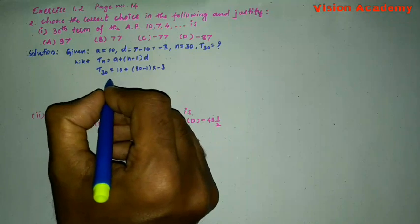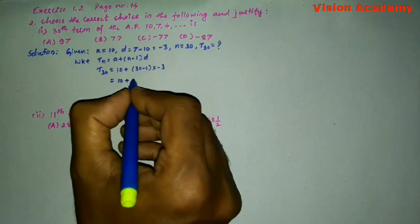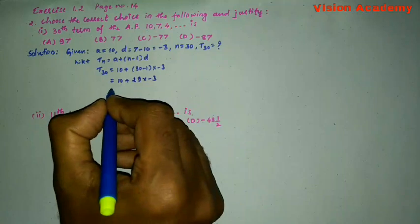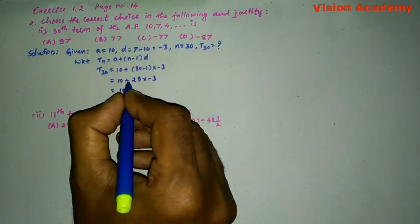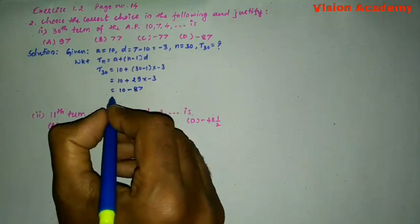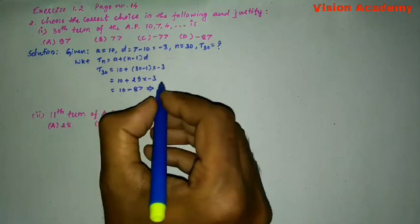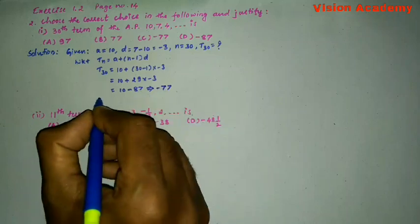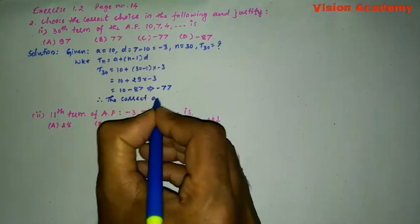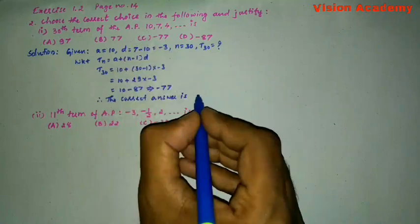We will simplify: 10 plus 30 minus 1 is 29 into minus 3 equal to 10 plus minus 87, which gives me 10 minus 87 gives me minus 77. Therefore, the correct answer is C.